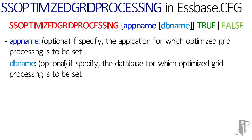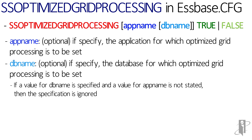Db name is also optional. It specifies the database in the application specified by app name for which optimized grid processing is to be set. If you specify a value for db name but do not specify a value for app name, your specification is ignored.